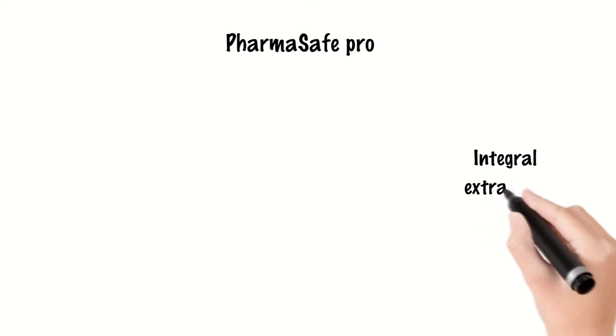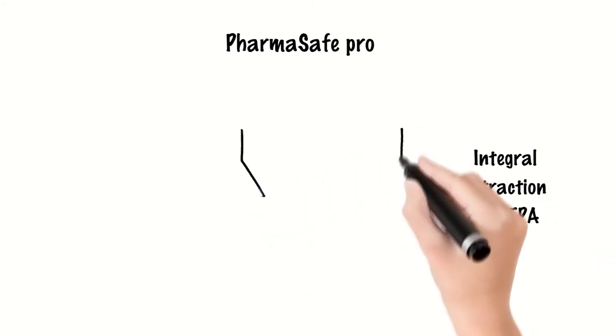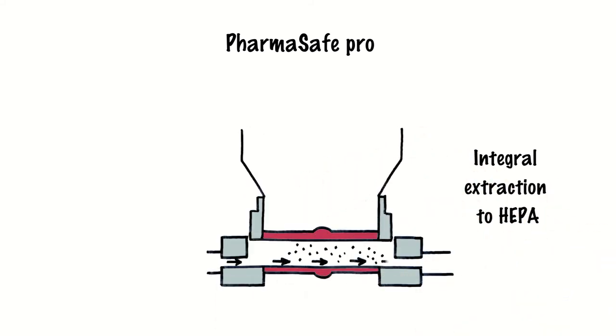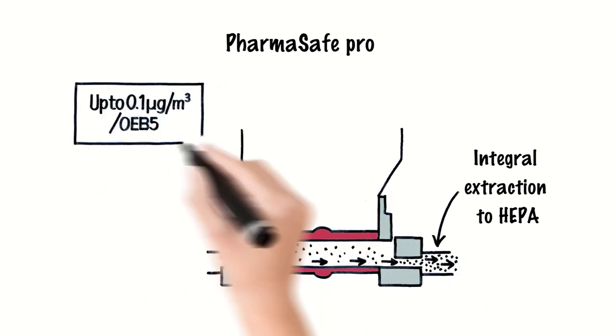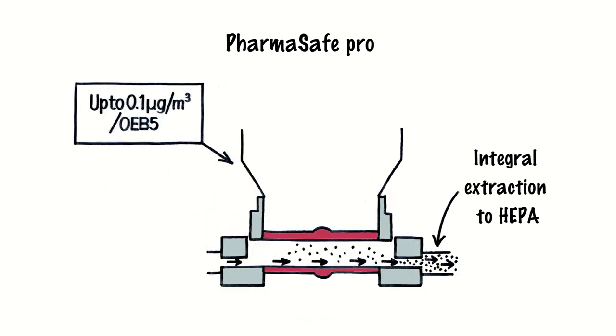The PharmaSafe Pro utilizes extraction integral to the active valve itself to capture particulate from the point of contact between the two valve halves immediately after disc separation for a more effective means of containment that performs to 0.1 microgram per meter cubed.